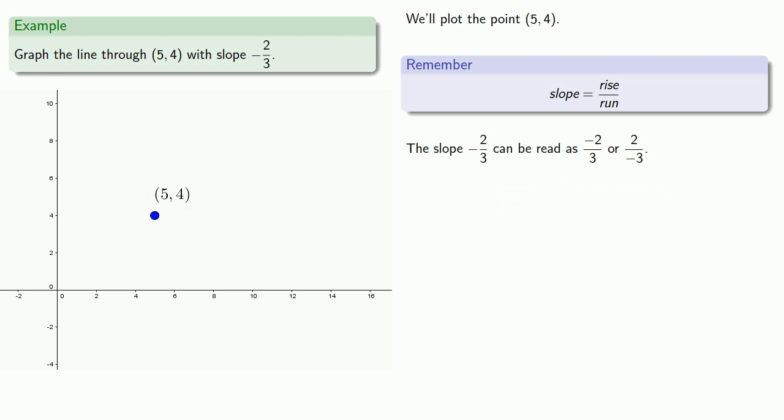Now because we like to read things from left to right, it's actually convenient if we always make the denominator positive. So let's read this slope as a rise over run of minus 2 over 3.